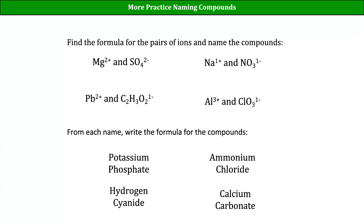Sulfate has the same thing - you'll see bisulfate or bisulfite. When we're talking polyatomic ions, 'bi-' doesn't mean two, it means there's a hydrogen on it. Baking soda is the most common example - sodium bicarb is short for sodium bicarbonate or sodium hydrogen carbonate. If you watch the British Baking Show, bakers sometimes say that because it's a more commonly used term in England and the UK than it is in the US these days.